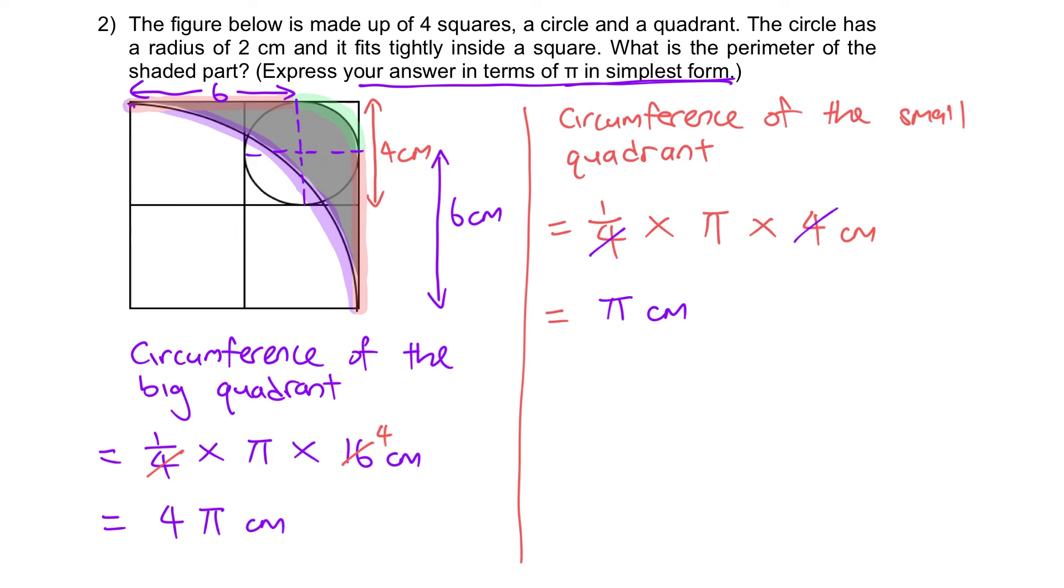Last, we just need to add them up, plus 6 plus 6, to find the answer. Hence, perimeter of the shaded part.